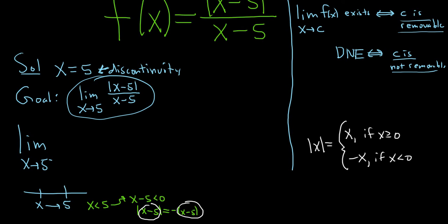So we go ahead and replace the top piece with negative x minus 5 over x minus 5. Oh, this is so cool because they cancel. It's so rigged. This is the limit as x approaches 5 from the left of negative 1.